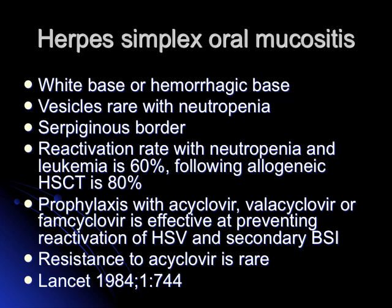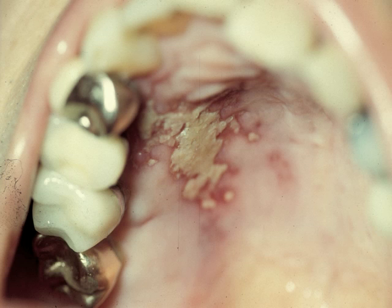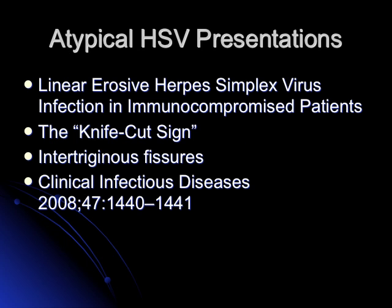This is an example of oral HSV — white base and irregular borders. These patients can have abnormal presentations of HSV. For example, in the genital area, you may see recurrent linear ulcers without blisters — what is called the knife-cut sign — or intertriginous fissures.